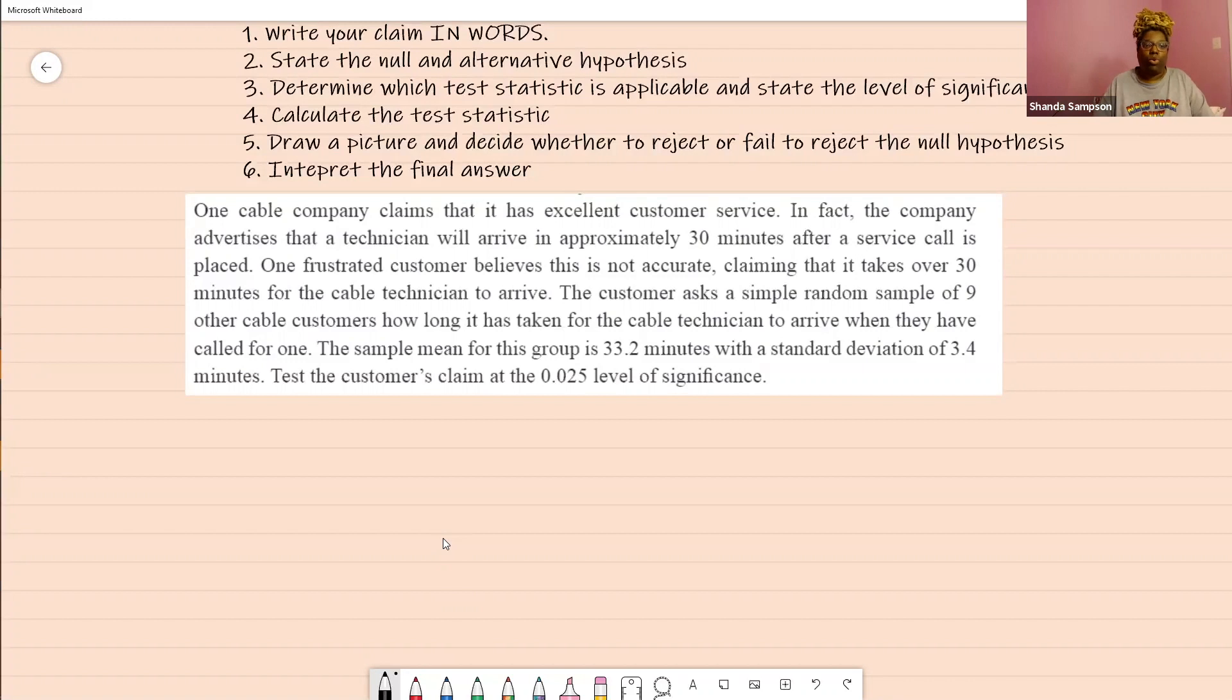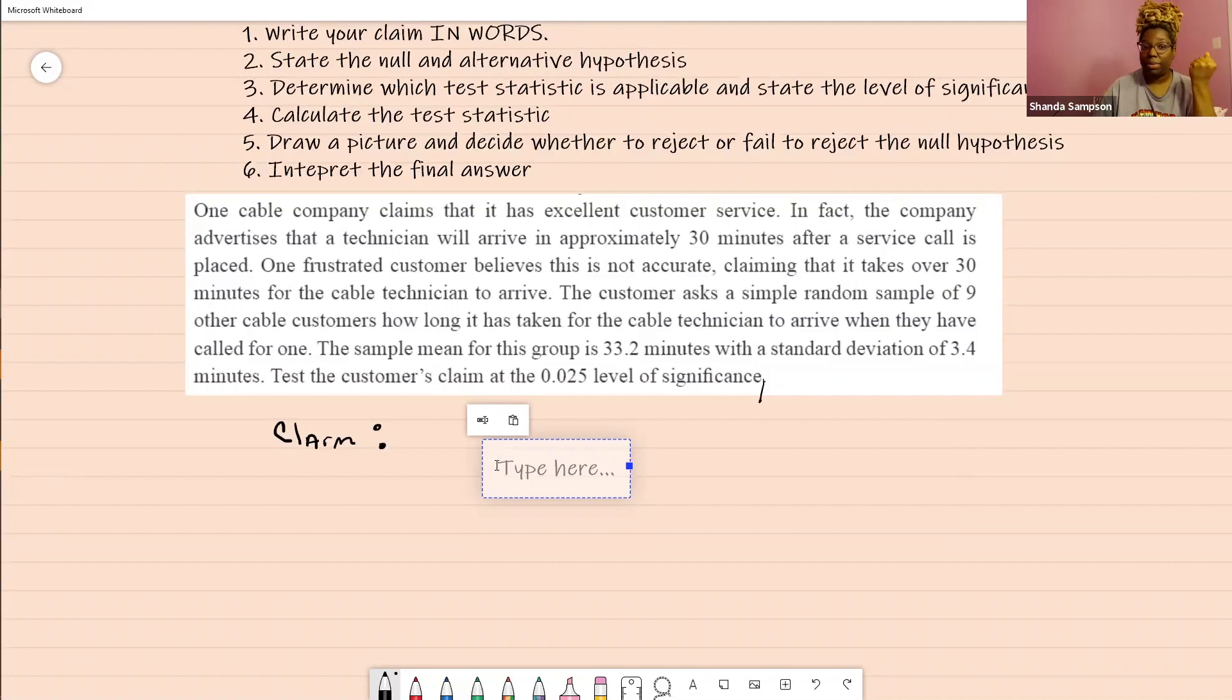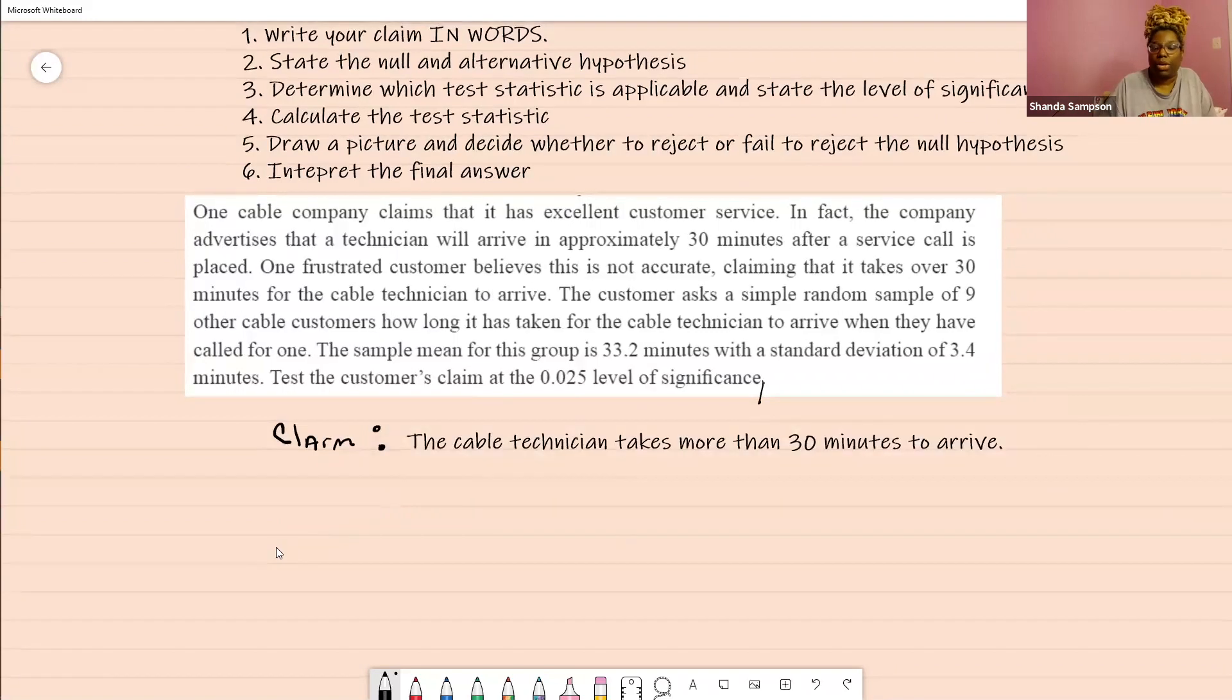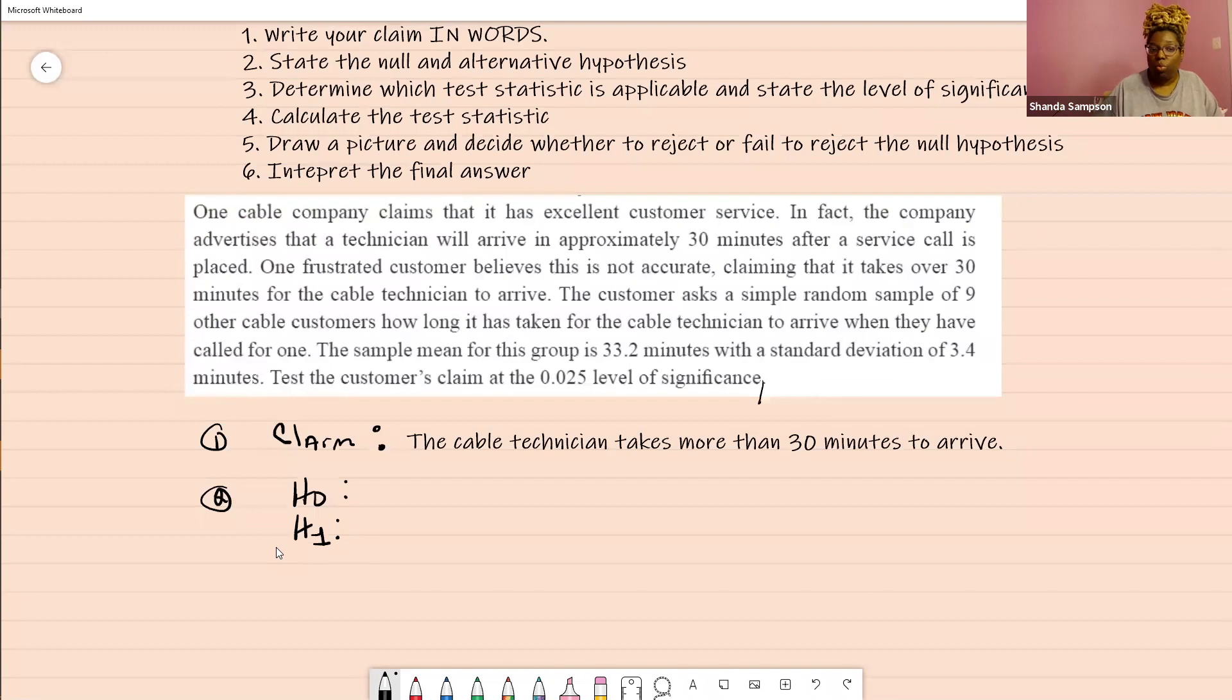The first thing we're going to do is write the claim in words. So what's the customer claiming here? They're claiming that it takes the cable technician more than 30 minutes to arrive. That's your claim. Next thing we're going to do is label your null and your alternate. Your alternate is the same as the claim. Mu is greater than 30. And of course here, the null is mu is equal to 30.